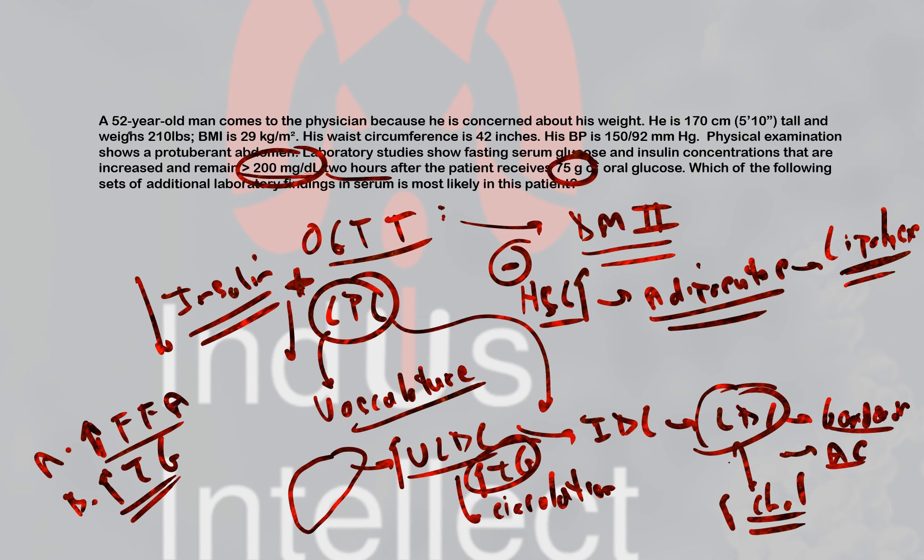And as far as your HDL is concerned, HDL could be elevated. But in this patient who has metabolic syndrome, or syndrome X, due to the obesity as well, you most likely are going to find a decrease in HDL. So if I had an answer choice that I needed to choose in diabetes type 2, then I would choose one in which there is increase in free fatty acids, increase in triglycerides, and decrease in HDL.